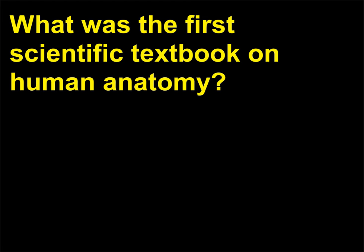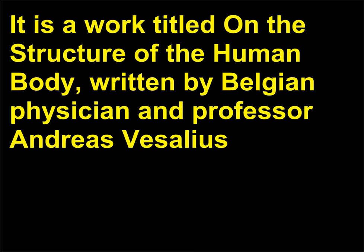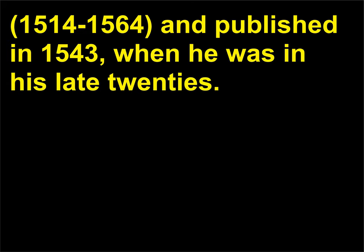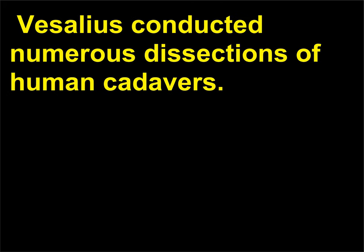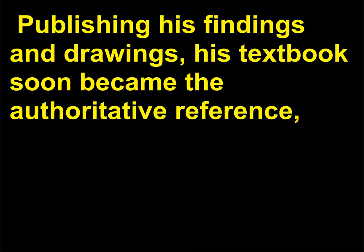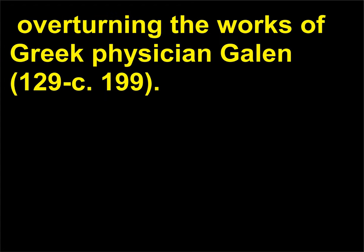What was the first scientific textbook on human anatomy? It is a work titled On the Structure of the Human Body, written by Belgian physician and professor Andreas Vesalius, 1514–1564, and published in 1543, when he was in his late twenties. Like other anatomists during the Renaissance, 1350–1600, Vesalius conducted numerous dissections of human cadavers. Publishing his findings and drawings, his textbook soon became the authoritative reference, overturning the works of Greek physician Galen, 129–c.199.